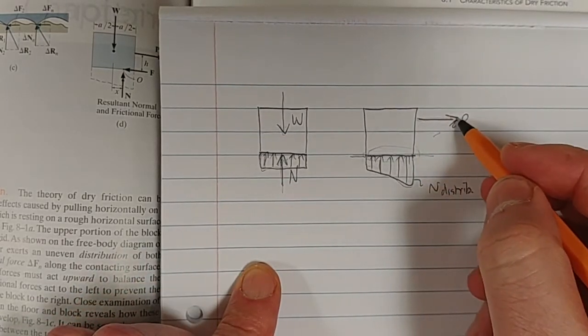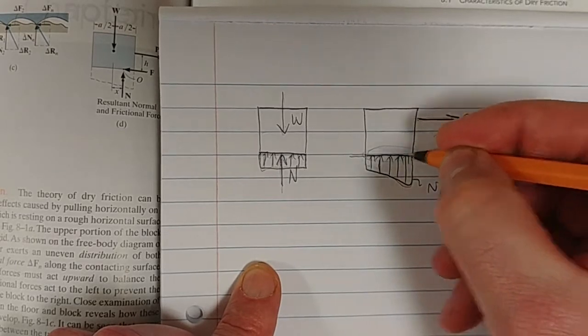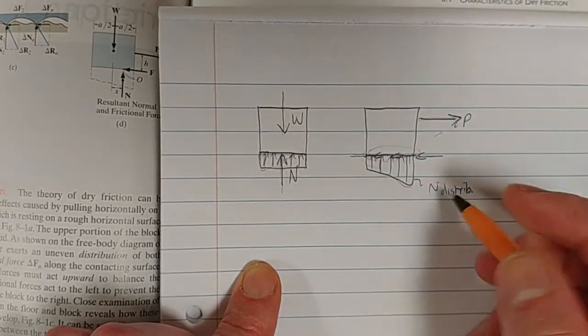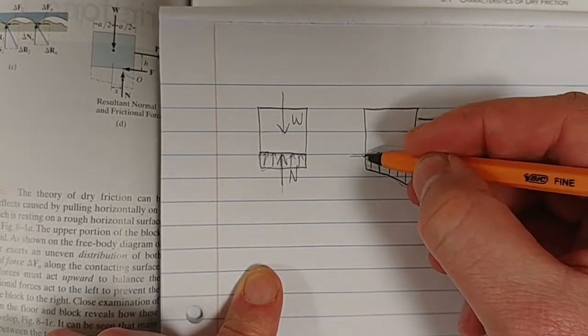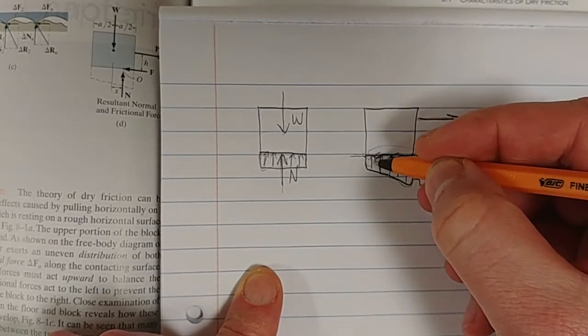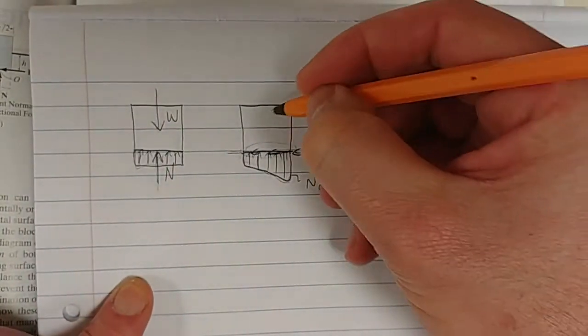So, as we begin to apply the force P, we develop a friction force, which is the horizontal force, and this normal force, the distribution begins to be lopsided, if you will. It begins to be more concentrated to that side. So, that ultimately...